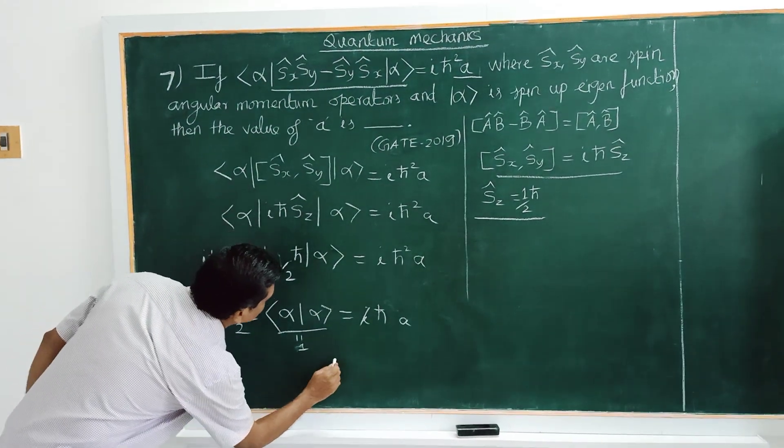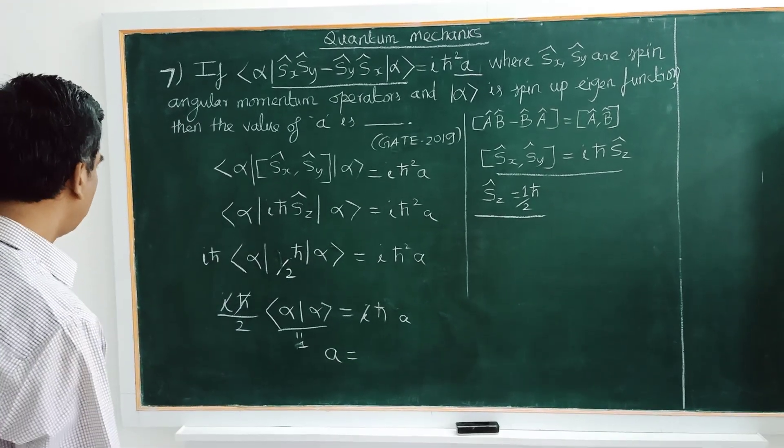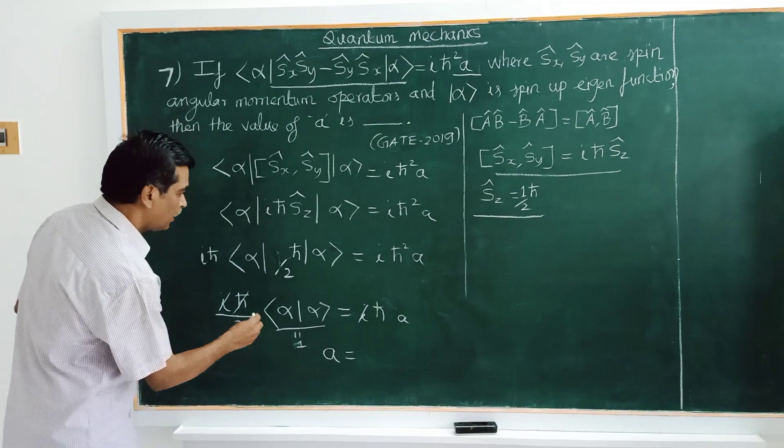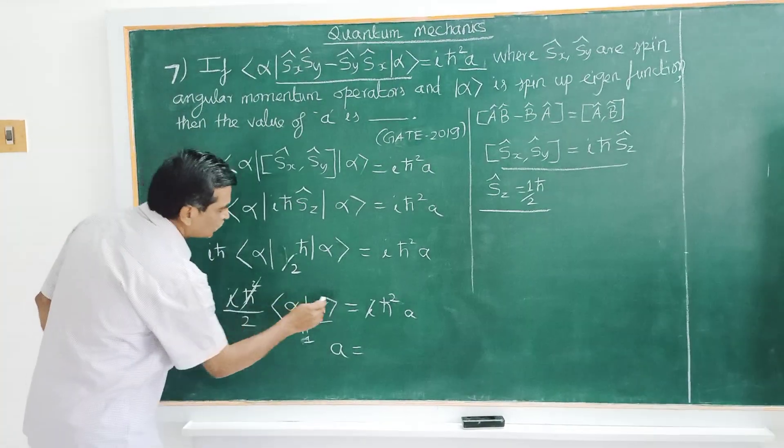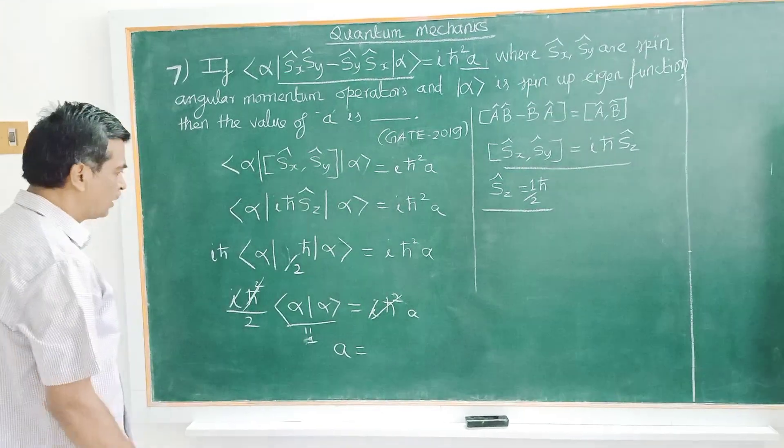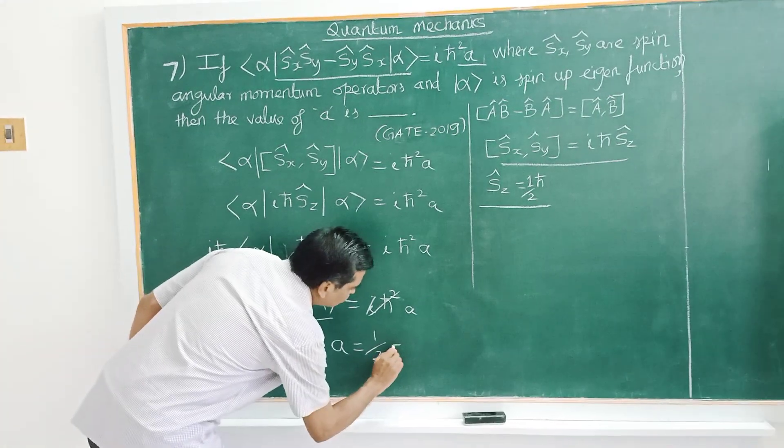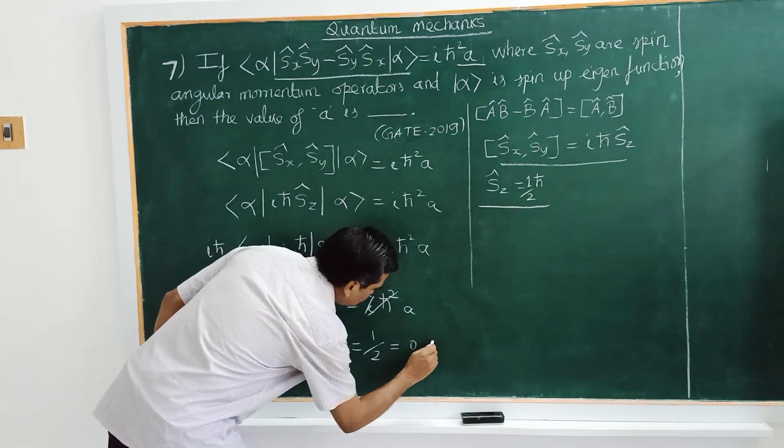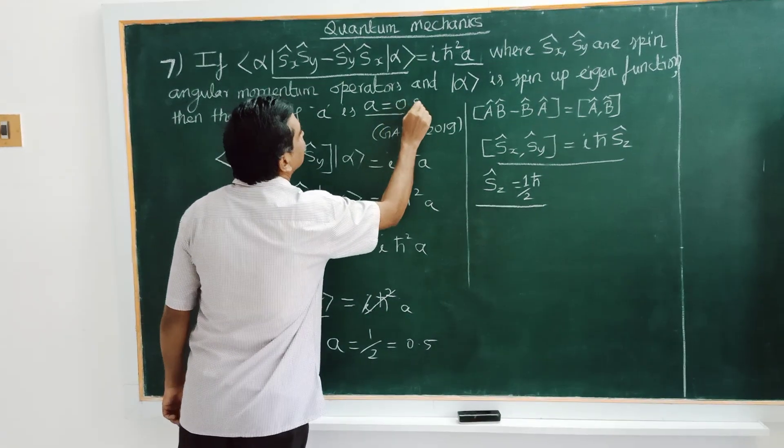Cancel this, so it will be therefore A equal to... Here again I can also square, I will get i squared. Therefore, you can cancel. Therefore, A equal to 1 by 2. Therefore, the answer is 0.5, A equal to 0.5.